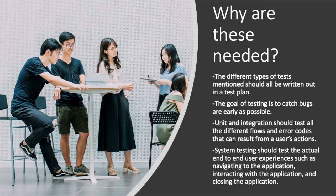Why do we need all these different types of tests? The earlier we can catch bugs and defects in the software development lifecycle process, the easier it is to fix them. All these tests should be written out in a testing plan to ensure full testing coverage. Unit testing is needed to test all different variations that the developed application may experience. Integration tests serve the same purpose. Because these tests are smaller, they allow for testing different variations efficiently. System tests are more high level, testing complete user flows.